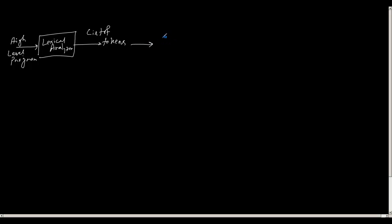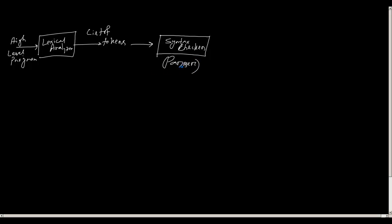This list of tokens is then fed to the second stage of a compiler, which is called the syntax analyzer or syntax checker — or simply, we call it a parser. So the second stage of a compiler is called a parser or a syntax checker.